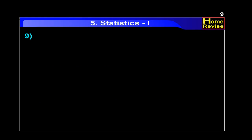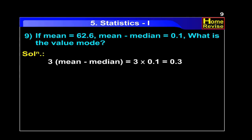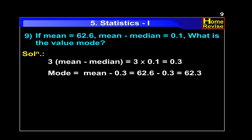Question number 9. If mean is equal to 62.6 and mean minus median is equal to 0.1, what is the value of Mode? Three into (mean minus median) equals 3 into 0.1, that is 0.3. Mode equals mean minus 0.3, that is 62.6 minus 0.3. So Mode is equal to 62.3.